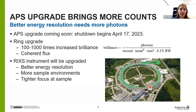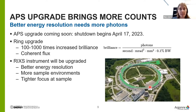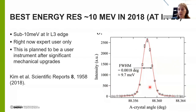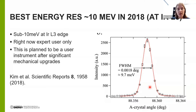Along with the ring upgrade, the RICS instrument will also be upgraded to allow better energy resolution. We'll have more sample environments and a tighter focus at the sample, so the spot size will be smaller. Right now, our absolute best energy resolution is just under 10 meV at the iridium L3 edge. In recent years we've done a lot of work on iridium compounds, so there's been a lot of focus on improving resolution here.